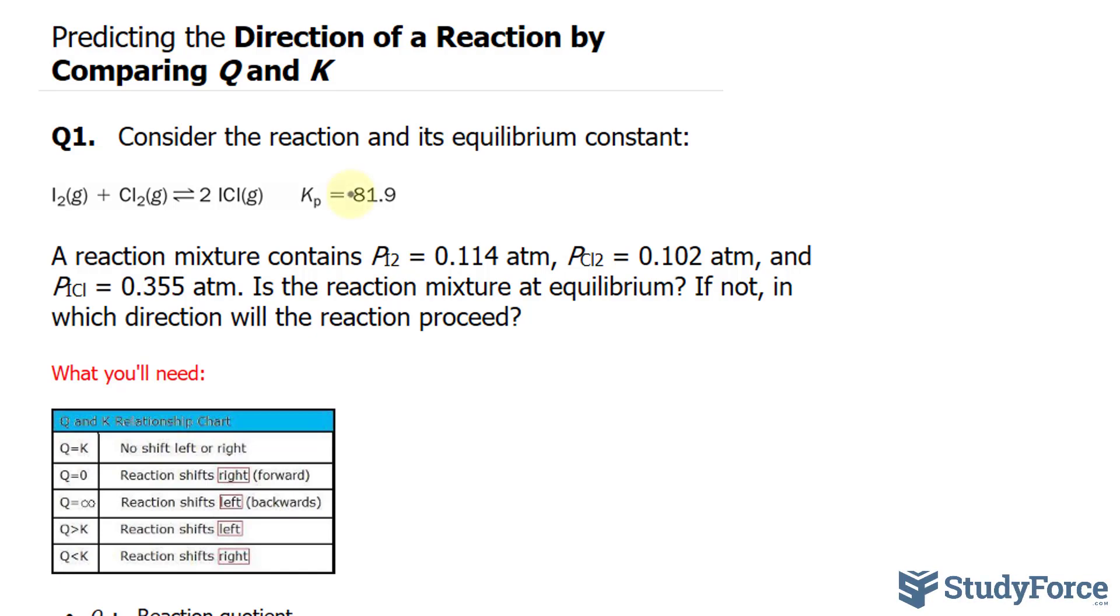As you can see, we've been given the equilibrium constant relative to the pressure, and that's 81.9. What I'll do is find the reaction quotient for the pressure by comparing the products to the reactants. So for ICL, we have a partial pressure of 0.355, and it has a coefficient of 2 at the front, so I will raise this to the power of 2.